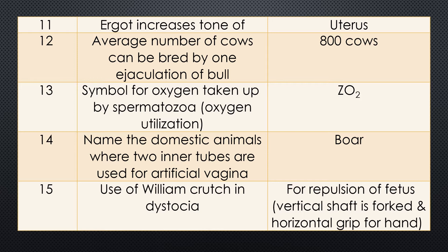Question 12. Average number of cows that can be bred by one ejaculation of bull? Answer: approximately 800 cows can be bred by one ejaculation of the bull. Question 13. Symbol for oxygen uptake by spermatozoa, that is called oxygen utilization. Question 14. Name the domestic animal where two inner tubes are used for artificial vagina. Answer: mare.